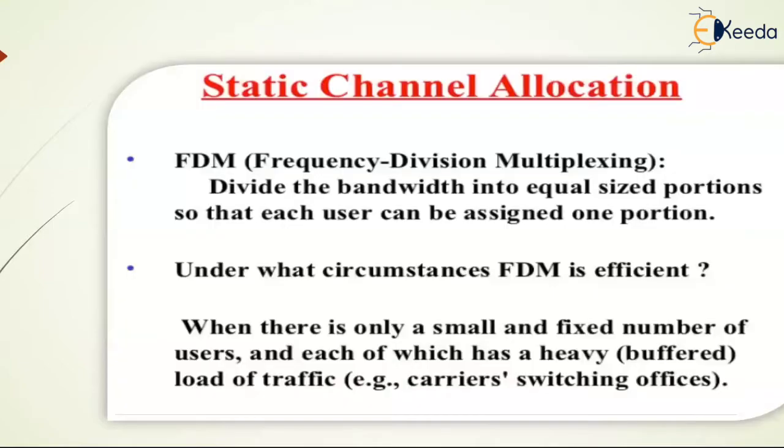First we will see static channel allocation. The traditional way of allocating a single channel among multiple computing users is frequency division multiplexing, that is FDM, and an example of such channel is telephone trunk. If there are N users, the bandwidth is divided into N equal-sized portions.